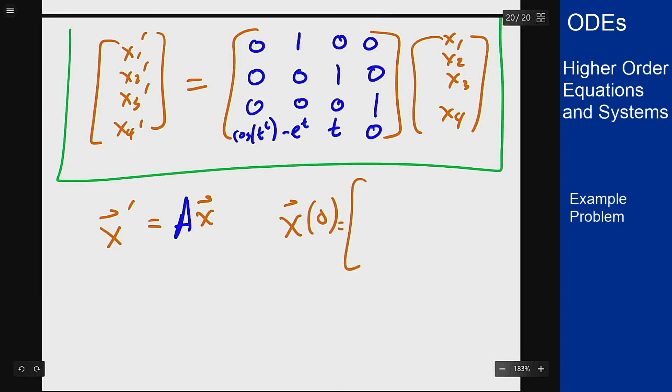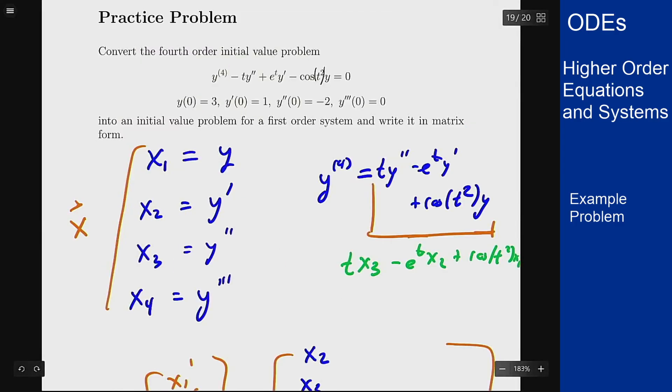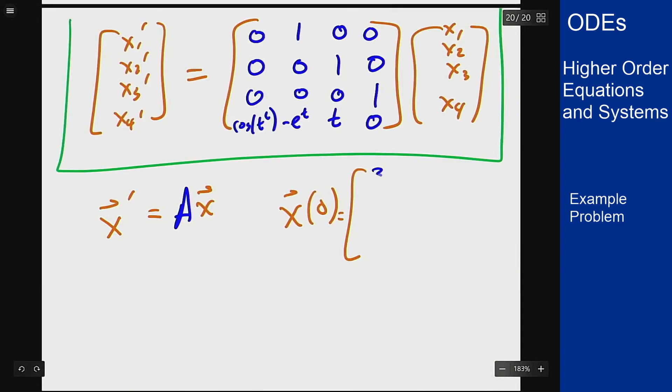And based on above I am told that I should have y of 0, which is x1 being 3, I should have y prime which is x2 being 1, double prime is minus 2, and third is 0, so the vector I get should be 3, 1, minus 2, 0. So that would be the initial condition and how it's set up for this sort of problem as well.